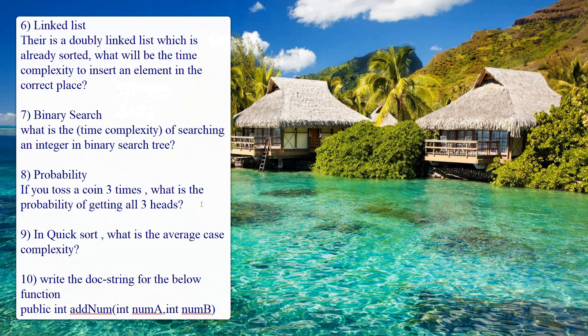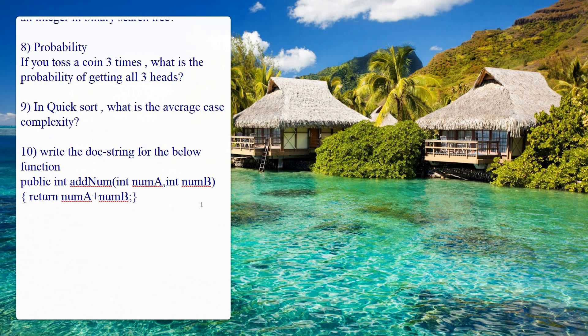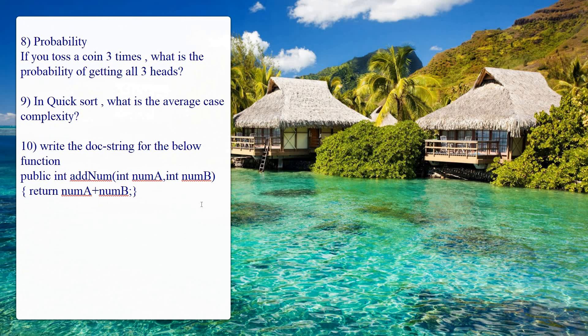The eighth question is on probability: if you toss a coin three times, what is the probability of getting all three heads? Be careful — they are asking only for all heads, not tails. Calculate and write the probability of getting all three heads, and in the approach describe the sample space of a coin toss and how you arrived at the answer.